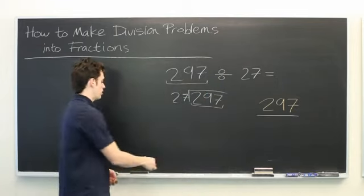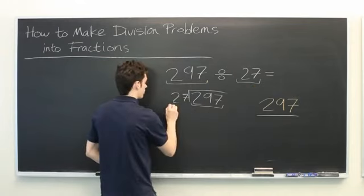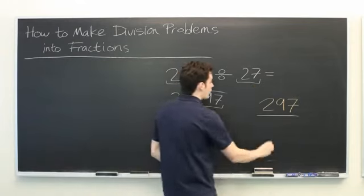Next, we want to find the divisor, which in this case is 27. That will go in the denominator.